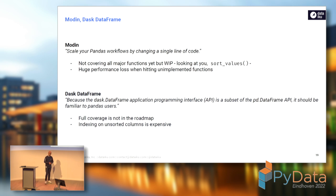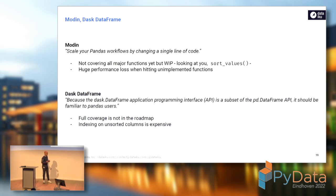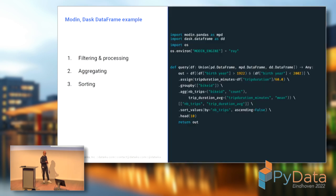For Dask, it's a bit different. They acknowledge that their goal is to use just a subset of the Pandas API — they're not going to replicate it entirely. They explicitly say on their website that full coverage is not in their roadmap. They're also fairly transparent that some ported things are still expensive in performance: any time you need to re-index or sort things, you may encounter performance issues, but at least they are more transparent about it.